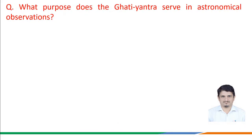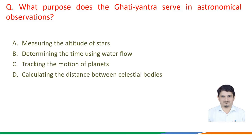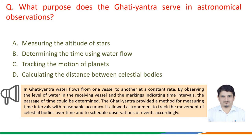The next question is: what purpose does the Gati Yantra serve in astronomical observations? Option a) measuring the altitude of the stars, option b) determining the time using water flow, option c) tracking the motion of the planets, option d) calculating the distance between celestial bodies.